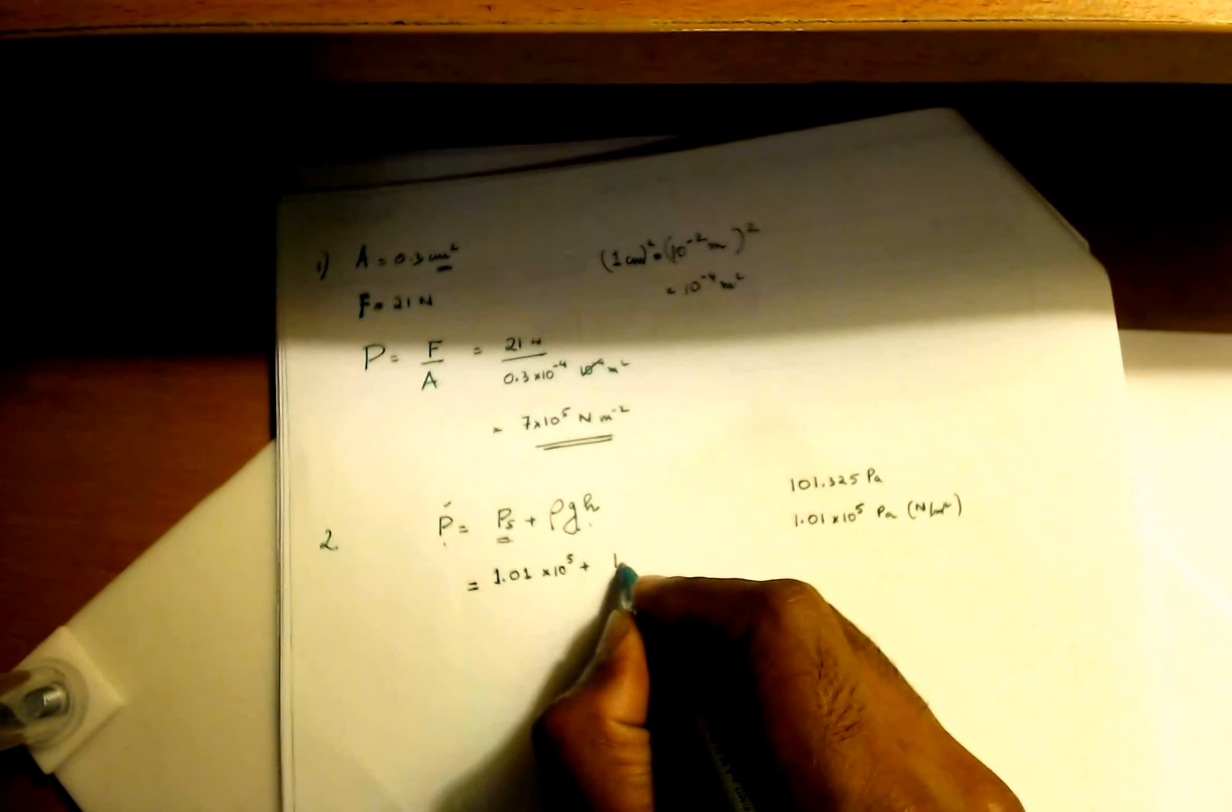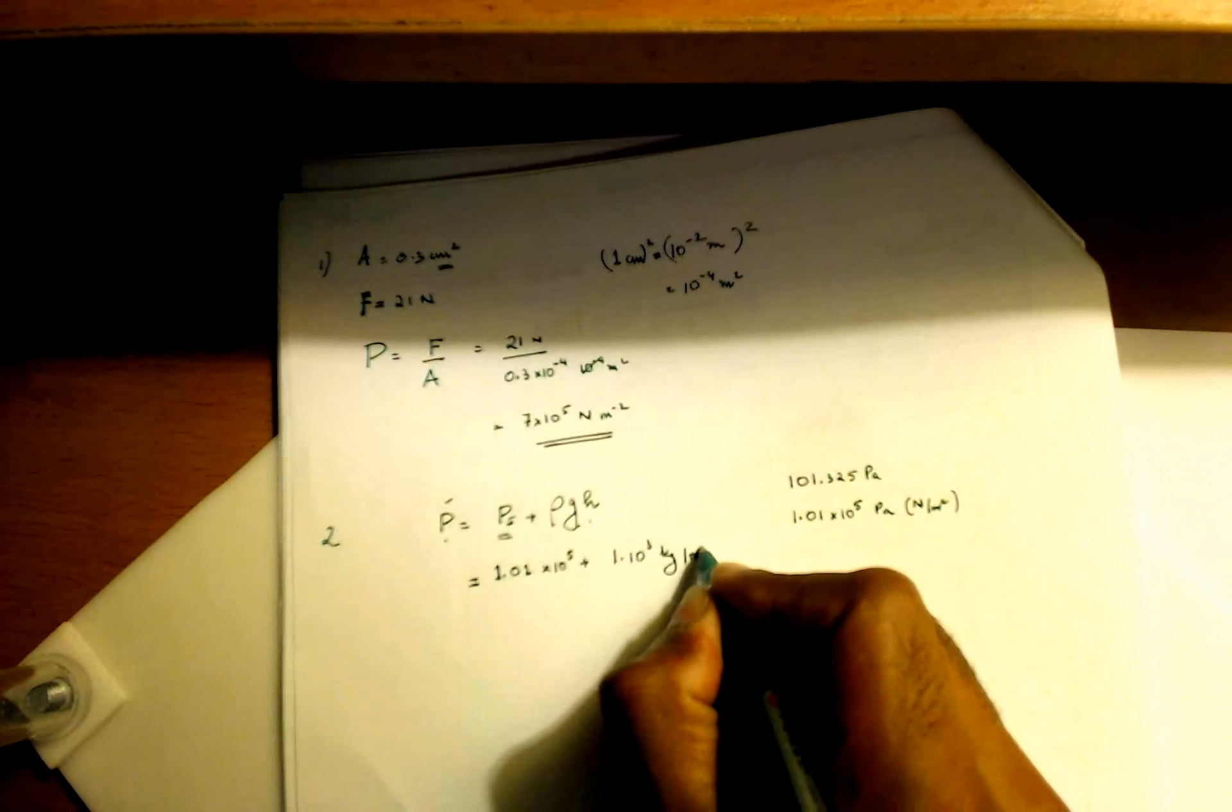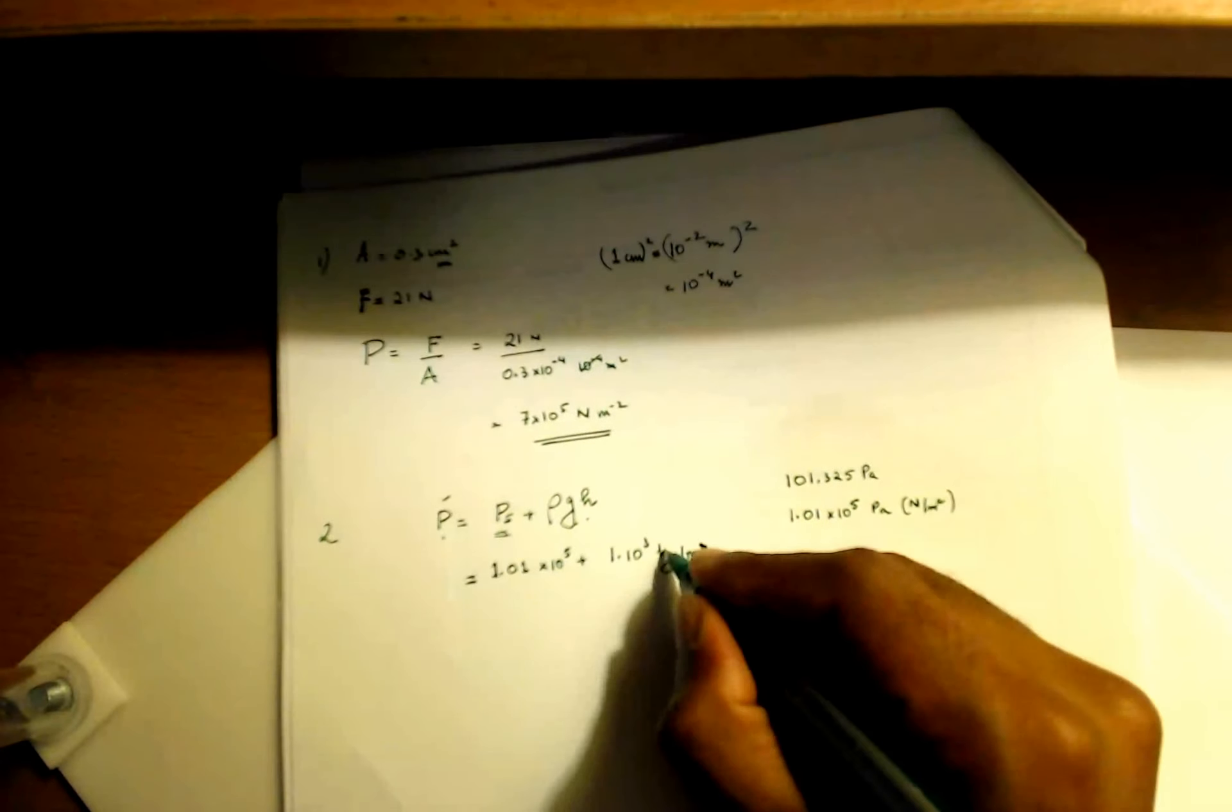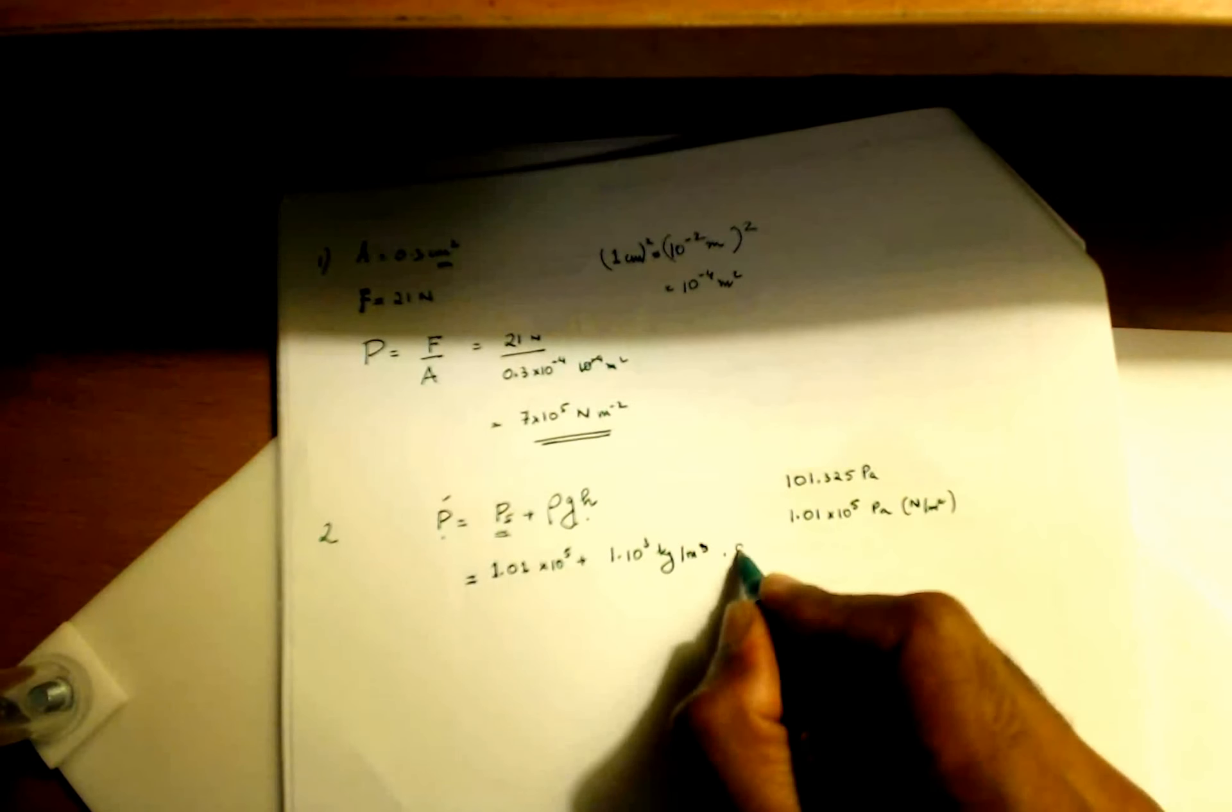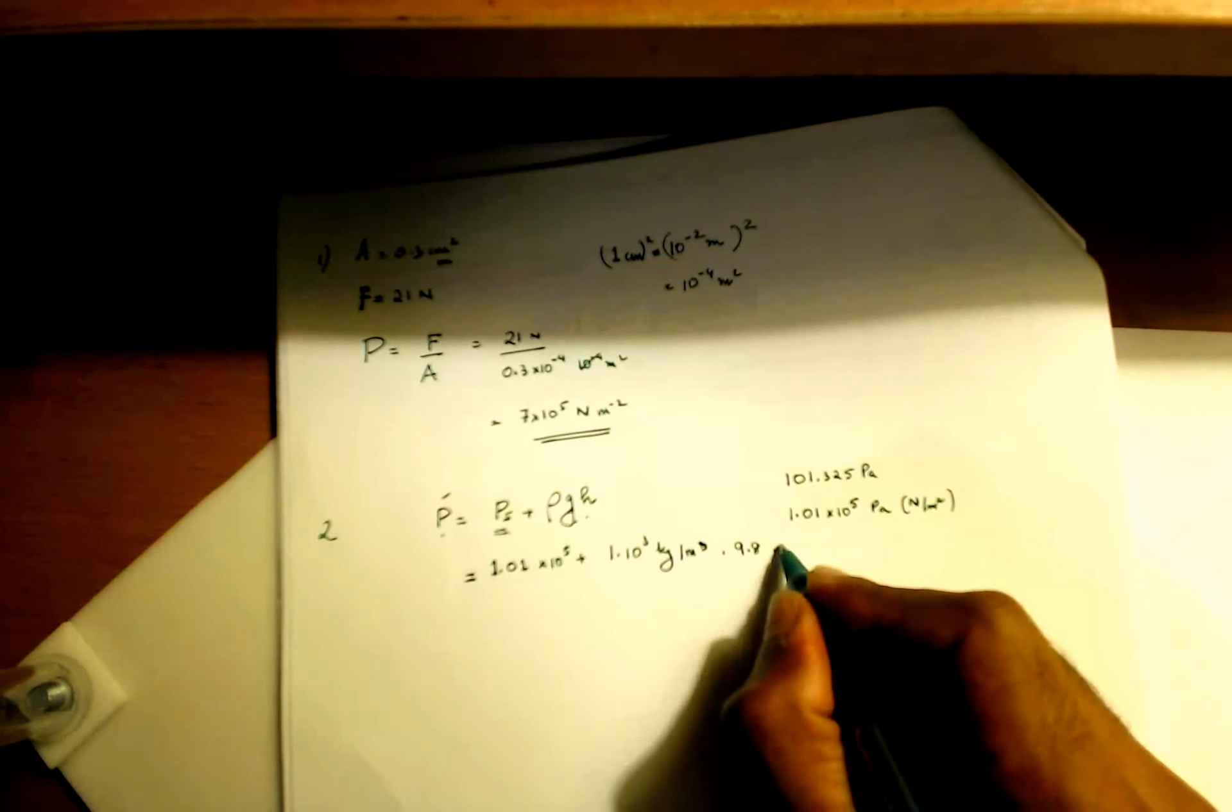So that's the surface pressure plus density. And density of water is given as a thousand or 1 times 10 raised to 3 kg per meter cubed, right? A meter cube, sorry, because that's mass per volume. So that's the density of water.